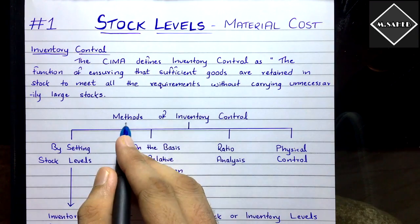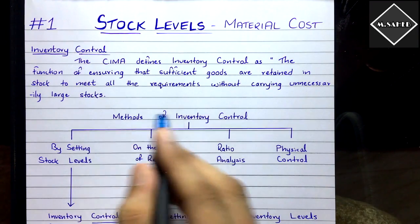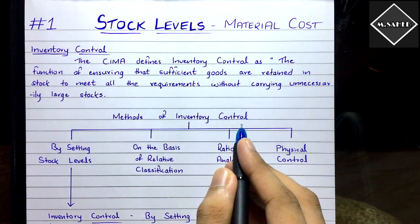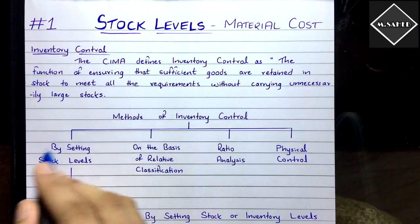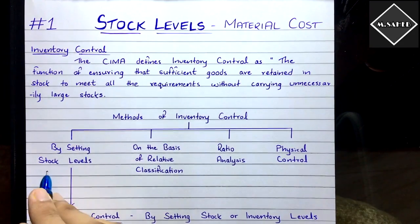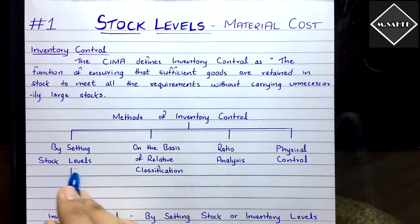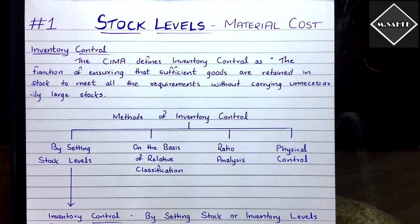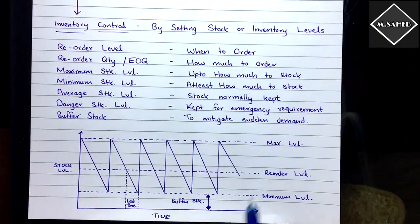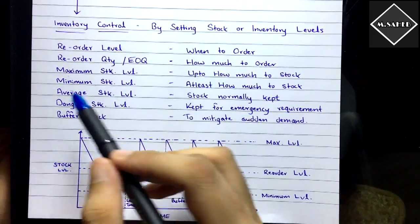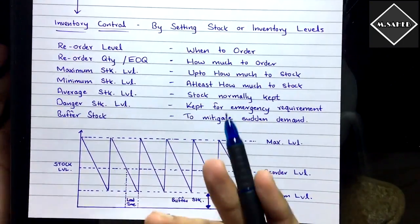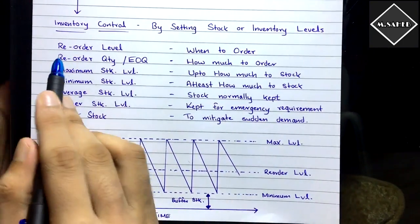Management has different methods of doing inventory control. One method is by setting quantitative stock levels, also called inventory levels. It's very simple.